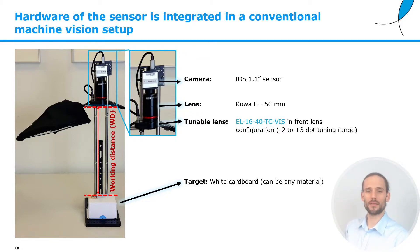Now, the target in this example is white cardboard, but as we will see later, this can be any material. The working distance is defined as usual as the distance from the expected object to the optical system.